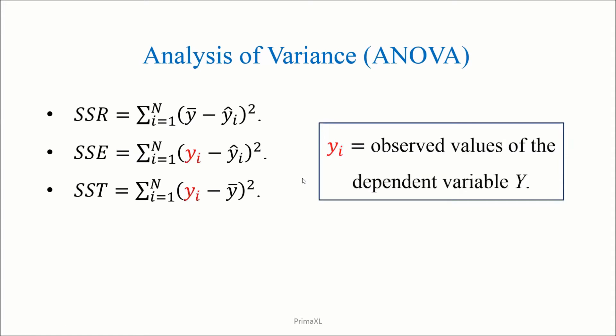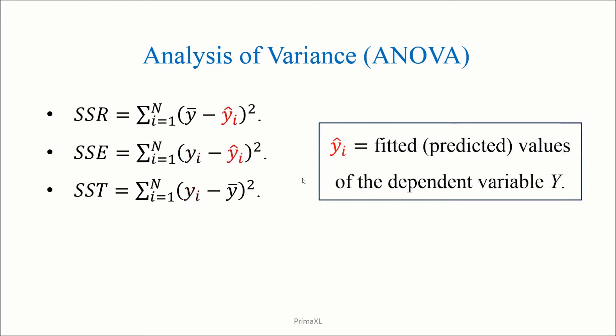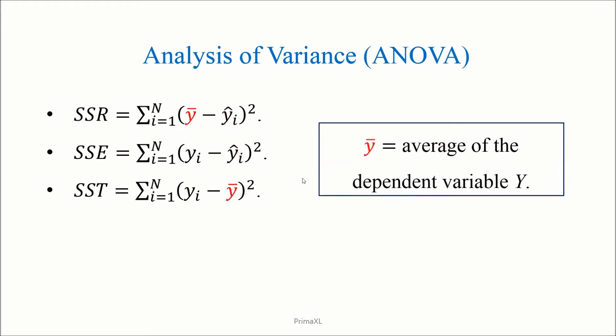The measured values of the dependent variable Y are represented by Yi. The predicted values of Y are denoted with this accent that looks like a hat. And the average value of Y is denoted by the accent that looks like a flat line.